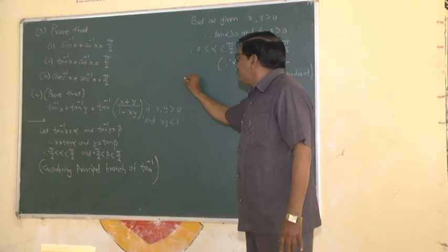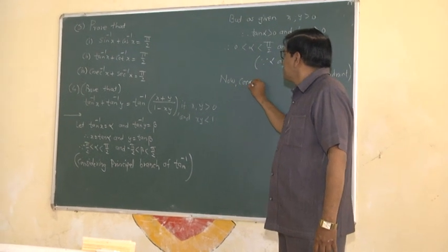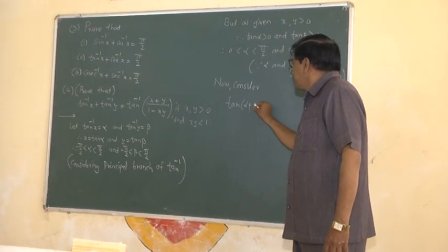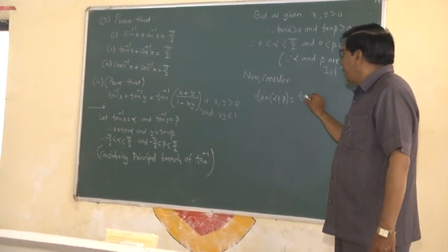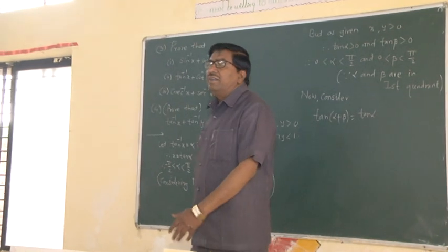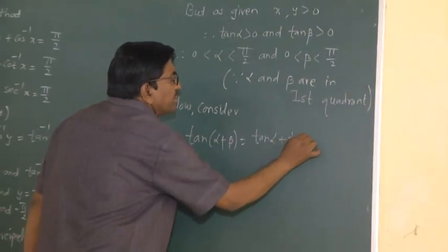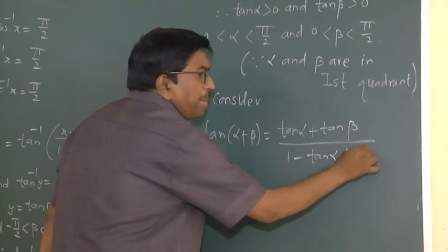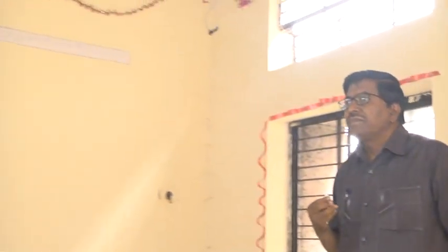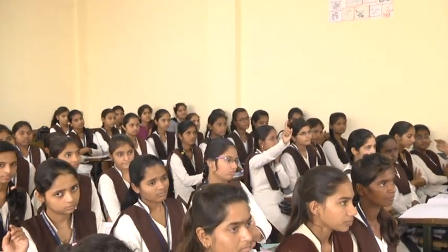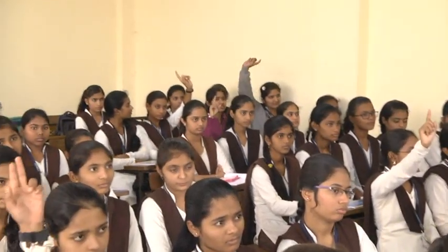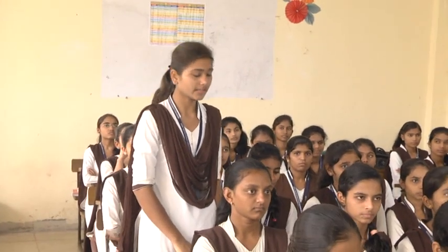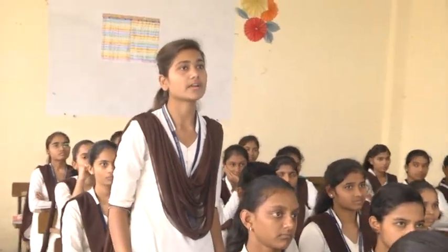Now consider tan(alpha plus beta), which equals tan alpha plus tan beta upon 1 minus tan alpha into tan beta. Why? Because tan(A plus B) equals tan A plus tan B upon 1 minus tan A into tan B.